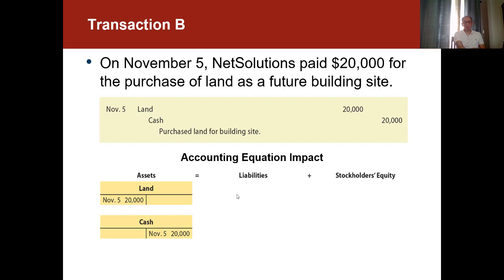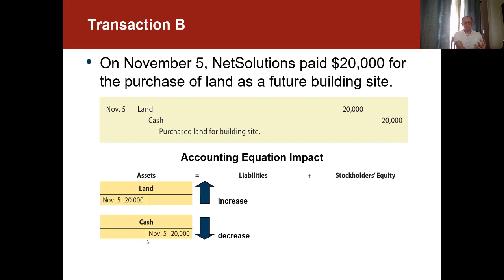Looking at how this affects the accounting equation: we debited land because land went up — it increased — so we debited on November 5th on the debit side for $20,000. Cash was paid so it went down, and we recorded it on the credit side. Both of these are assets: one asset went up and another went down. One asset got debited, the other got credited. Both of these accounts are called balance sheet accounts because both of them are assets.